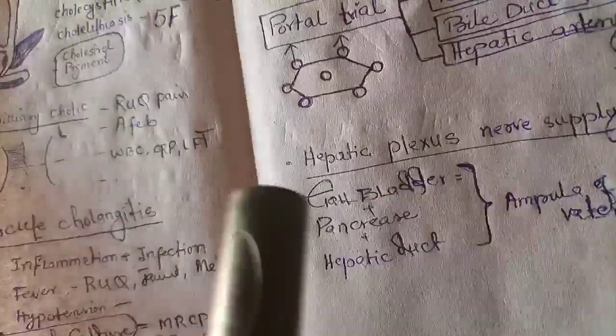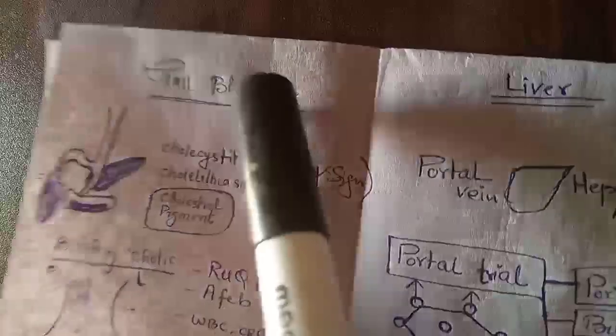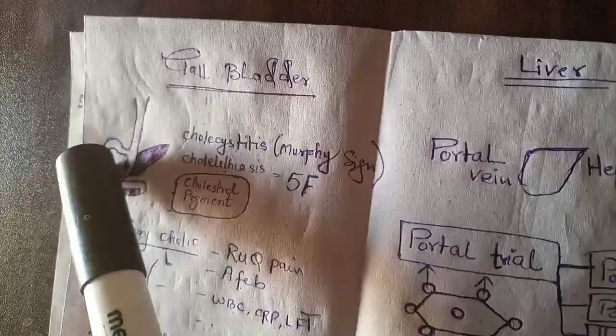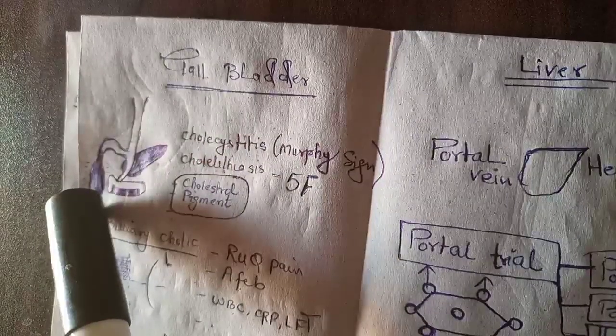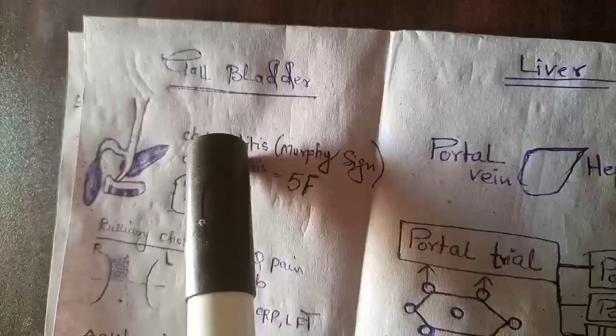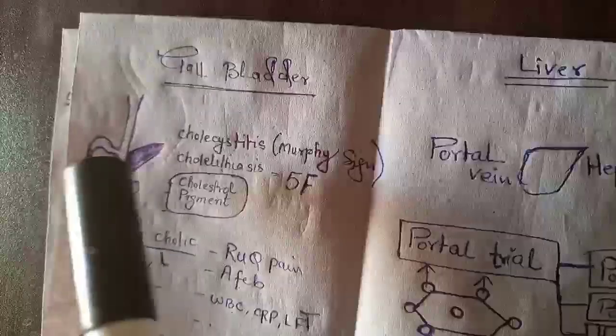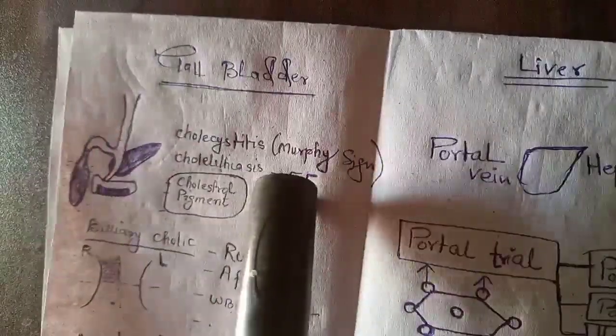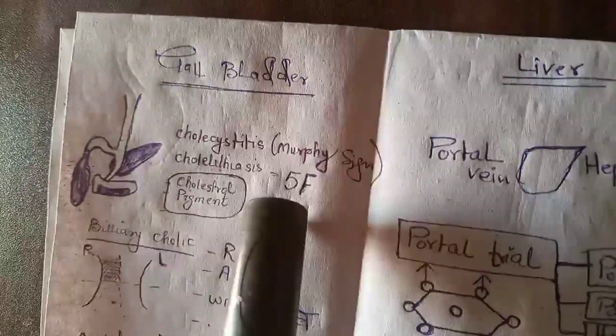Gallbladder: when stone is lodged here and then inflammation of gallbladder happens, that condition is known as cholecystitis and Murphy's sign is positive in cholecystitis. While there is a stone, that term is known as cholelithiasis.